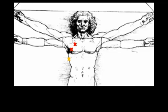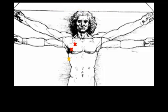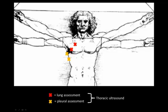Moving on to pleural ultrasound: the third view is the diaphragm and the costophrenic angle, looking for pleural effusion or consolidation of the lung. The fourth view is the PLAPS point, which is effectively an extremely dependent region of the lung where you will find the highest sensitivity for detection of consolidation and pleural fluid. The combination of these points represents a full thoracic ultrasound assessment.